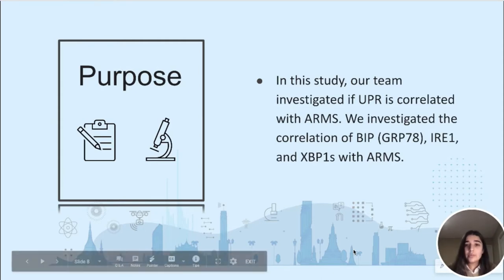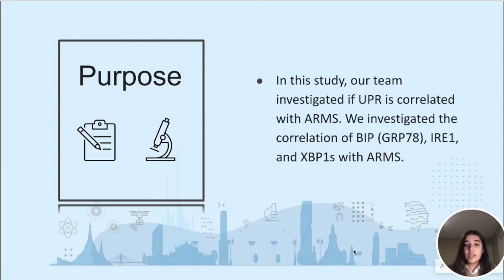The purpose of our study was to see if UPR is correlated with ARMS. We investigated the correlation of IRE-1 and its downstream proteins, BIP (also known as GRP78) and XBP1S, with that of ARMS.